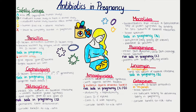The B category is given to medications that have not demonstrated any risk to the fetus in animal reproduction studies. However, there are no well-controlled or documented studies proving its safety in humans. The B category is still considered relatively safe but it might be lacking in studies.